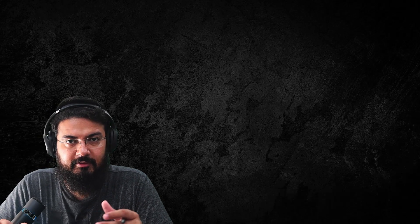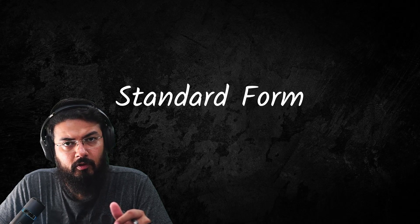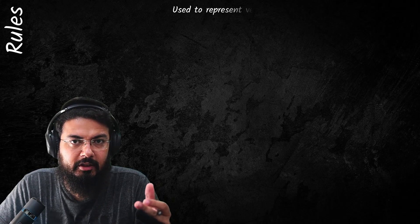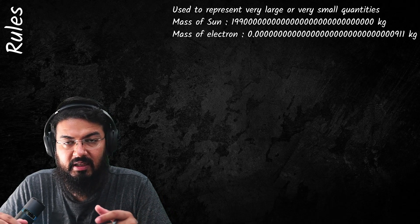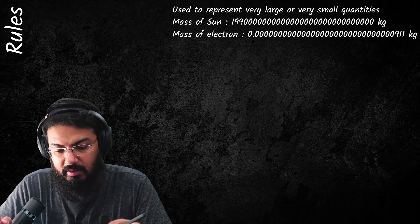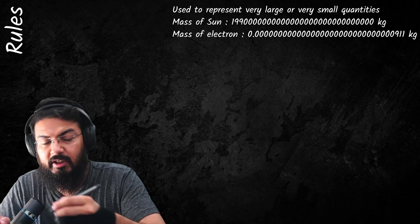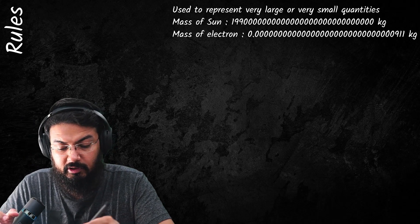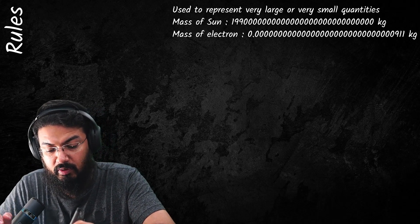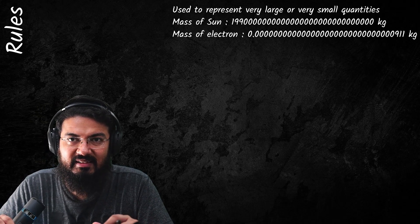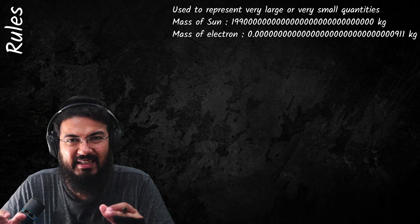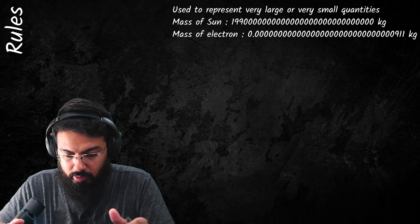Assalamualaikum kids, so today we are going to discuss standard form. Standard form is basically a convenient way of writing very large or very small values. For example, you have the mass of the sun, which is a very large value, or the mass of an electron, which is a very very small value.